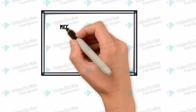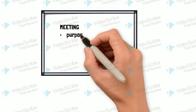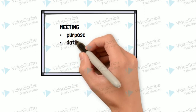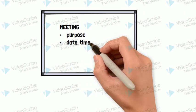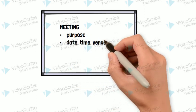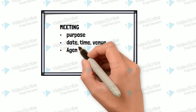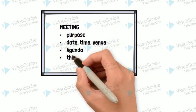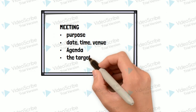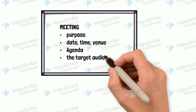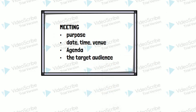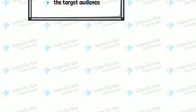The third type is a meeting notice. Here we have to mention the purpose, date, time, venue, the agenda of the meeting, and the target audience.